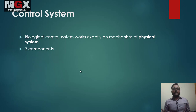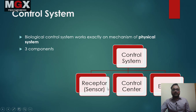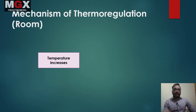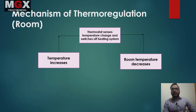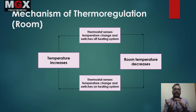What is the biological control system? It is similar to a physical system, like a centrally controlled heating system in buildings. If room temperature exceeds 25 degrees, the cooling system activates; if lower, the heating system activates. There are three components: a receptor or sensor which detects change, a control center which receives the message, and effectors which are stimulated by the control center. This is how thermoregulation works in a room.